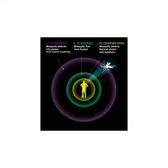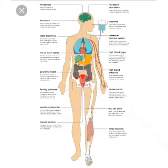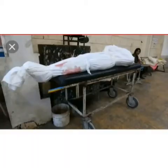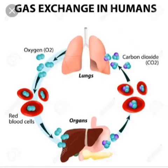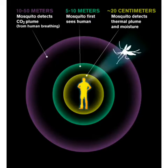Mosquitoes use 3 signals to detect you. Signal 1: Carbon Dioxide. Human beings breathe every day — they bring in oxygen and breathe out carbon dioxide, commonly known as CO2. At night, when a human being breathes out carbon dioxide, the mosquito immediately detects this CO2 and starts coming toward you. Mosquitoes can detect carbon dioxide within a range of 10 to 15 meters. Very amazing.